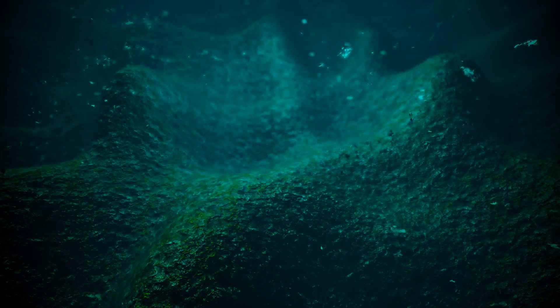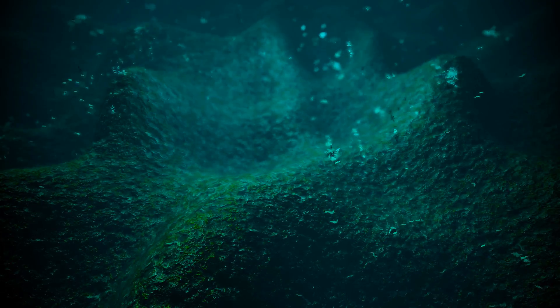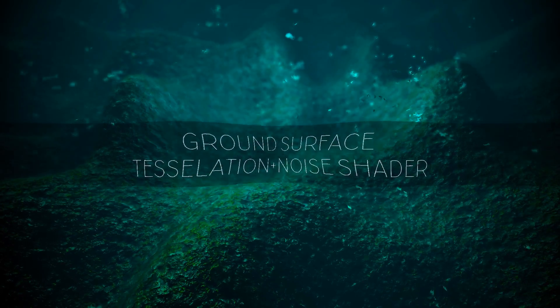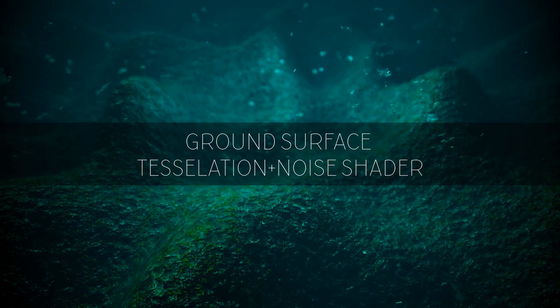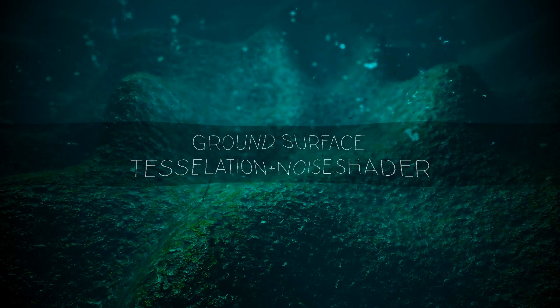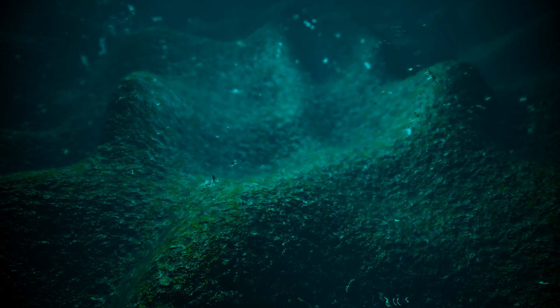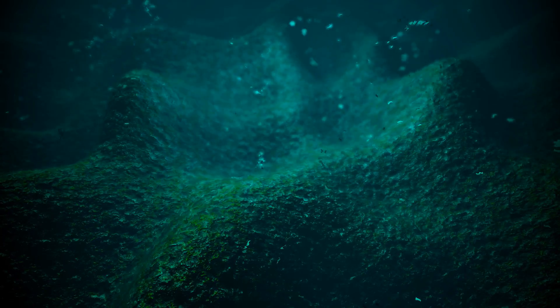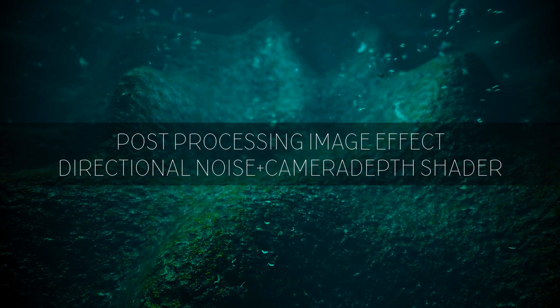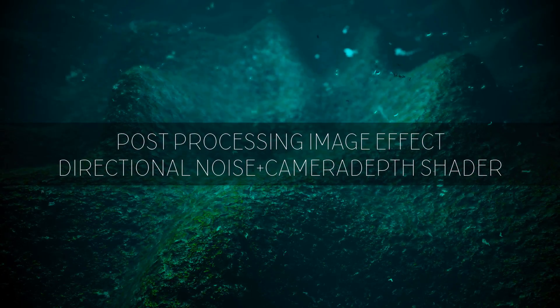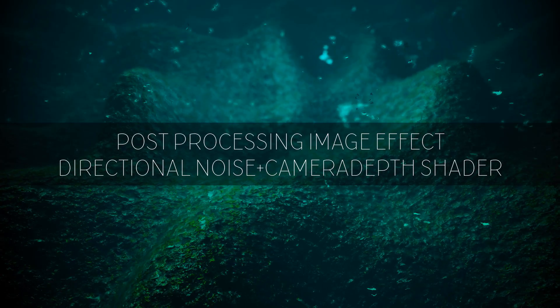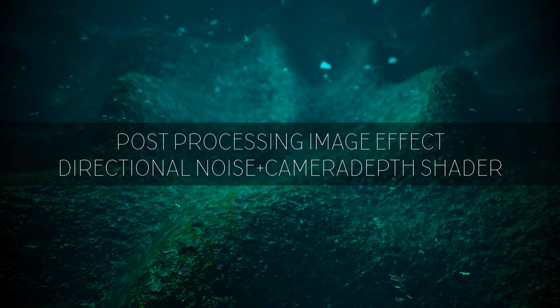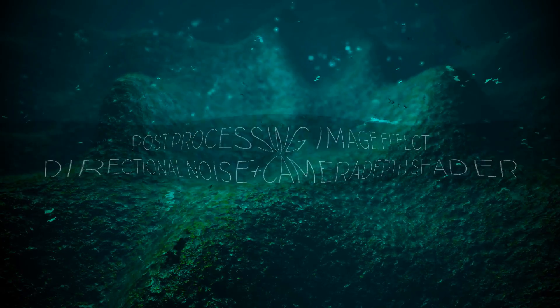You will learn to apply noise in three different ways. First, we will create a ground based on a surface deformation shader with noise applied to the vertex offsets. The second shader will be a post-processing image effect applied to the camera, offsetting the pixels with directional noise, taking the camera depth buffer into account.